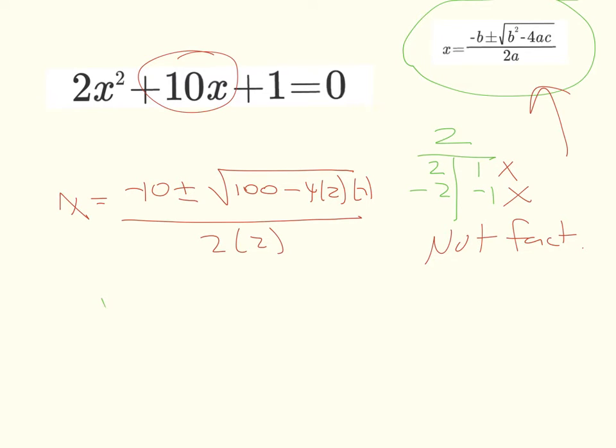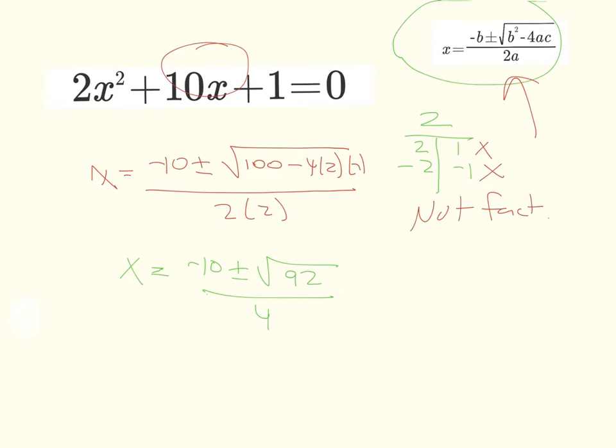So what we're left with is x is going to be equal to negative 10 plus or minus the square root of 92 all over 4. So obviously this is not a good looking number. The square root of 92 is about equal to 9.6. So if we solve for x here, this is going to end up being negative 10 plus or minus 9.6 over 4.